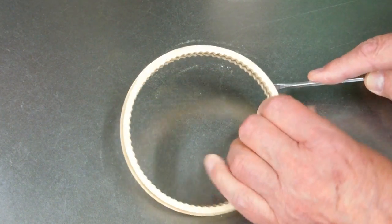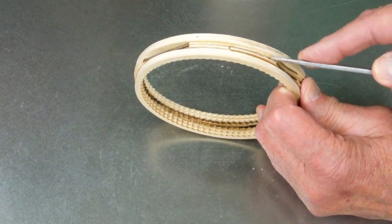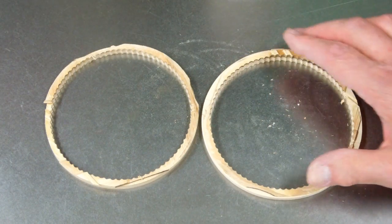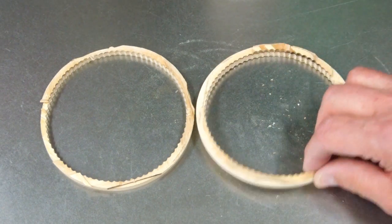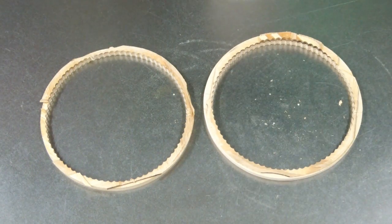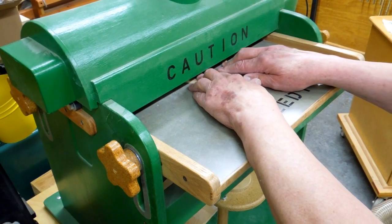Using a screwdriver you can get that plywood to split apart. Now I can run that through the drum sander and clean that up and I'll be back to my quarter inch plywood.